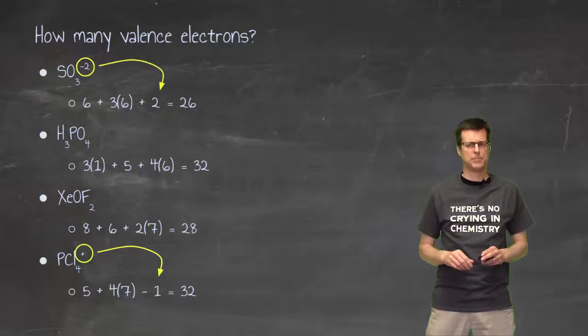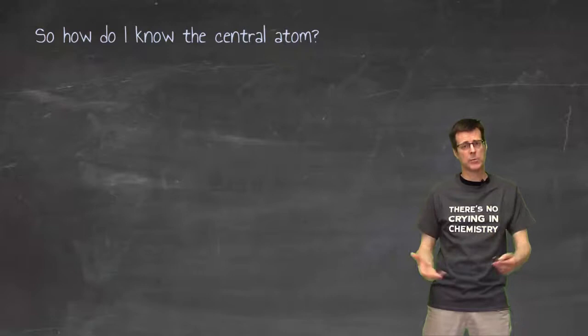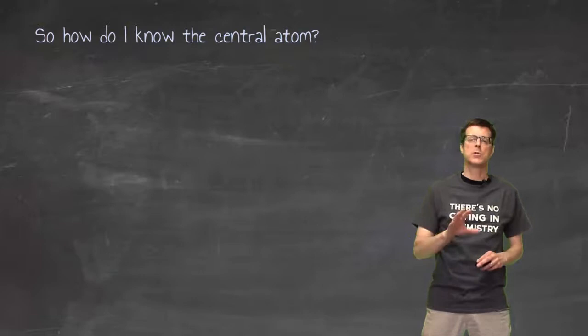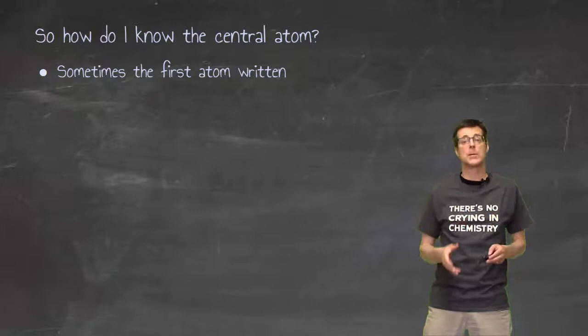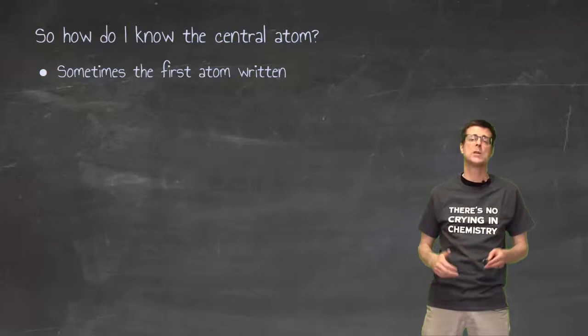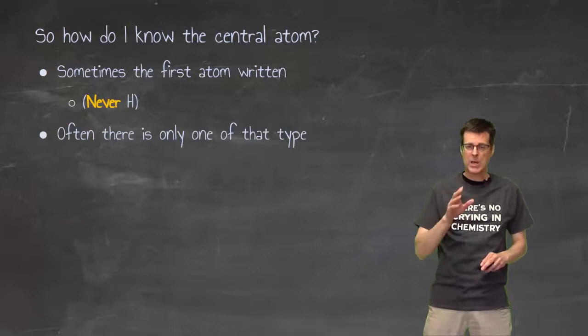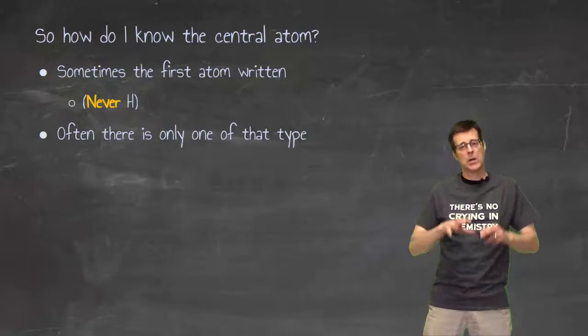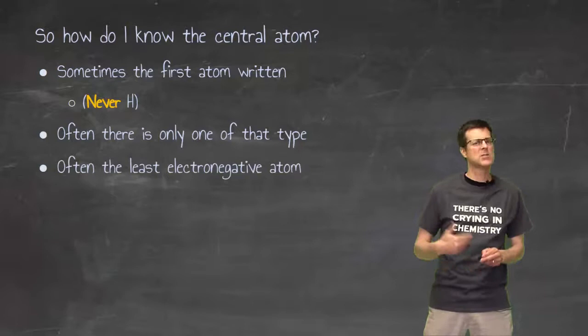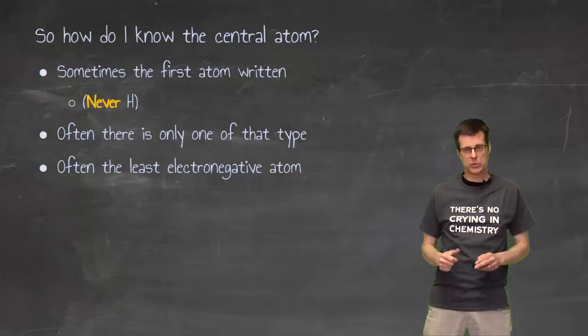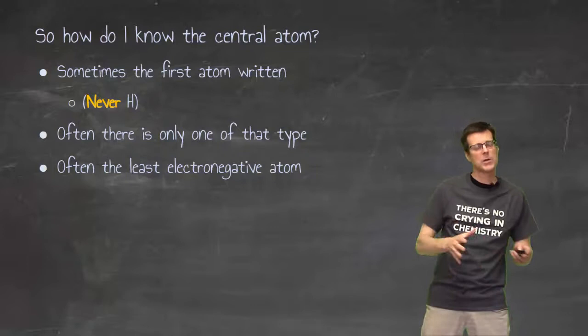Central atom was our next thing, putting the outer atoms around our central atom. So how do I know which one the central atom is? Mostly comes down to experience, but there are a few things that are going to help you along the way. Number one is it's often the first atom that's written. Unless it's hydrogen, we almost always write hydrogen first, and it will never be the central atom. If there's only one of that type, good chance that it's going to be the central atom. And if it's the least electronegative element, that's also usually a pretty good pattern. We're going to be kind of working with the trends in the periodic table, a little bit further away from that upper right-hand corner.